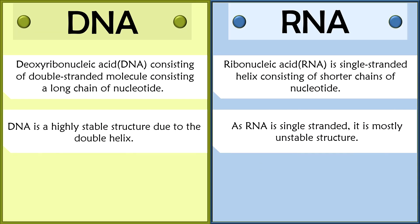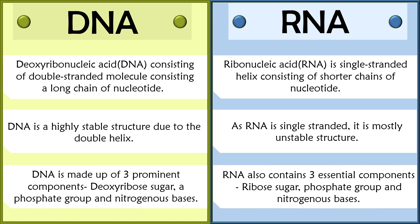DNA is highly stable because of the base pairing between the double helix. In contrast, RNA is highly unstable as it is a single-stranded entity. Talking about the composition of DNA, the DNA molecule has three prominent components. Similarly, RNA is also made up of three essential components: ribose sugar, phosphate group, and nitrogenous bases.